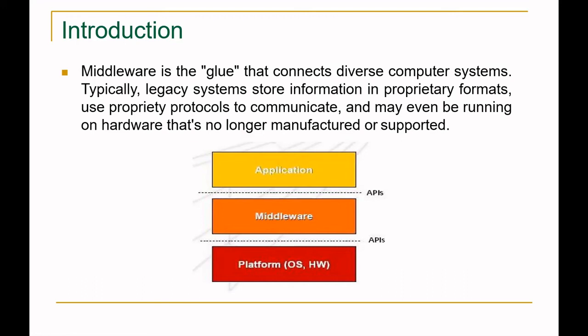In client-server architecture, the server performs storage and the client performs presentation and processing. When the same work requires multiple machines, the entire architecture scales to many machines to reduce computation load. This is where the concept called middleware comes in and plays a very crucial role.